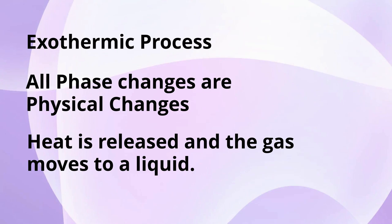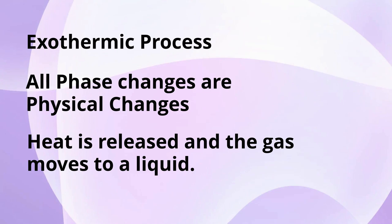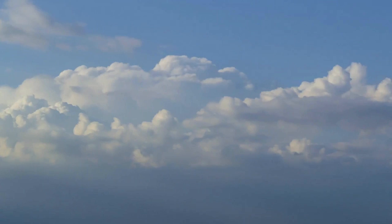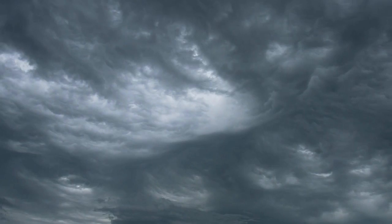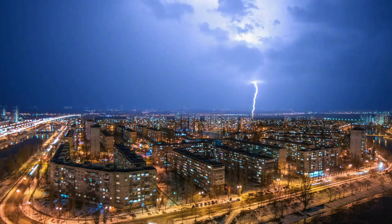Back to the thunderstorm. Thunderstorms form when warm, moist air rises into cold air. The warm air becomes cooler, which causes the water vapor to form small water droplets due to condensation, which eventually can create a thunderstorm, or at least some rain.